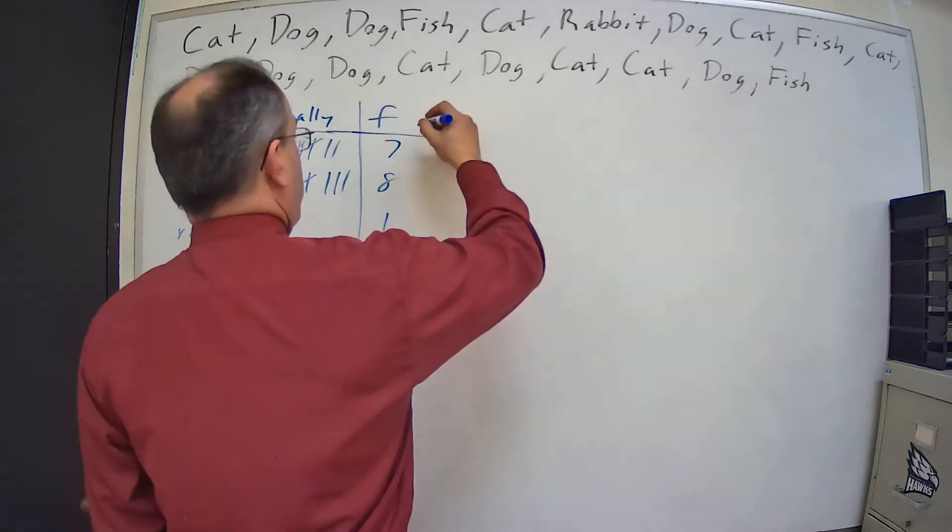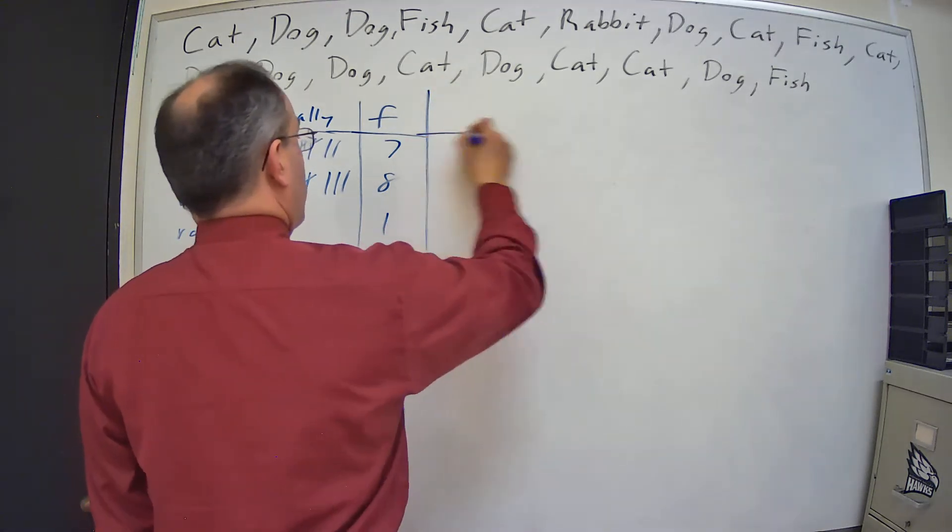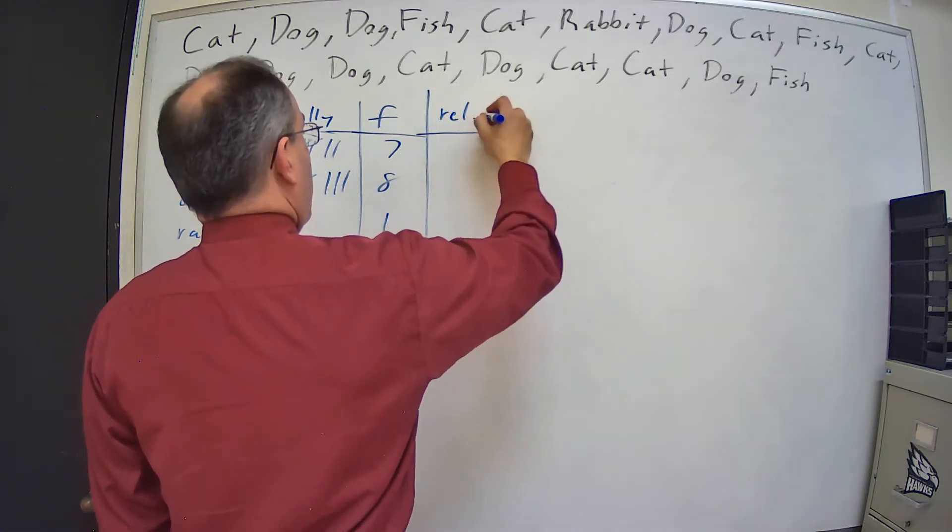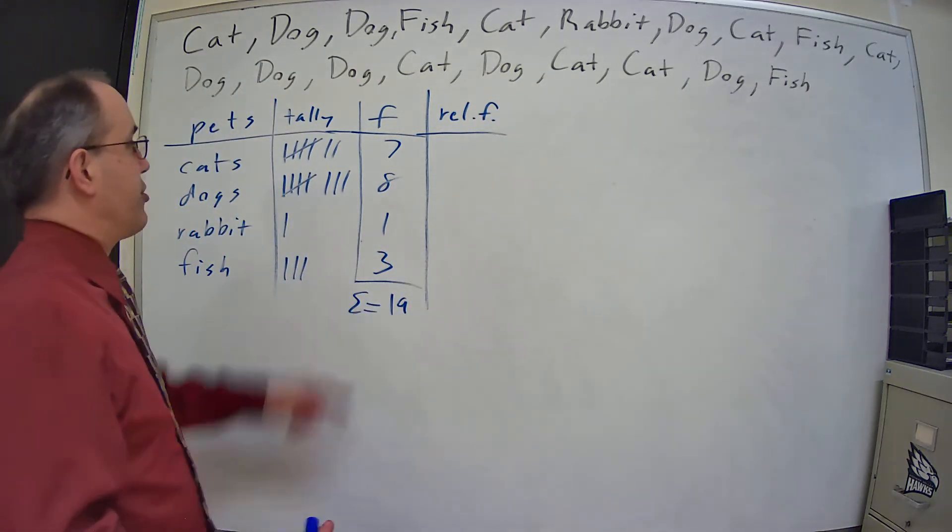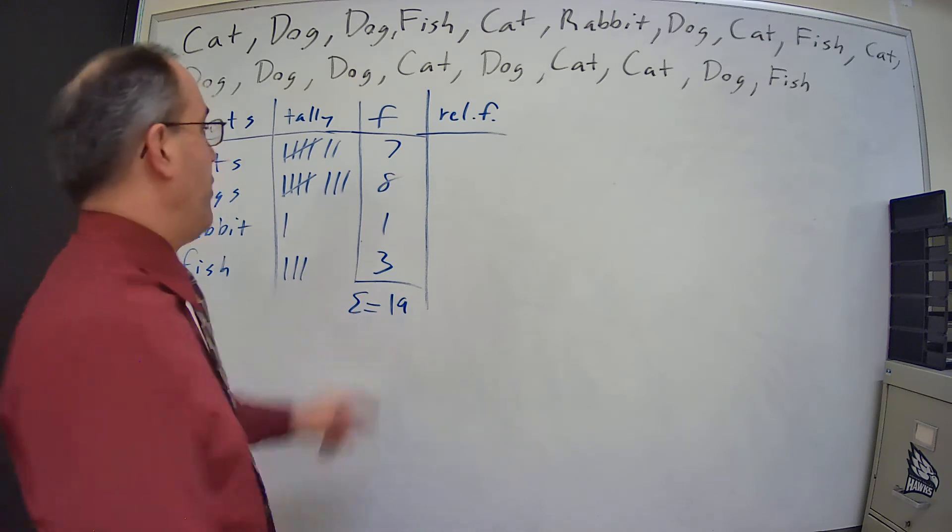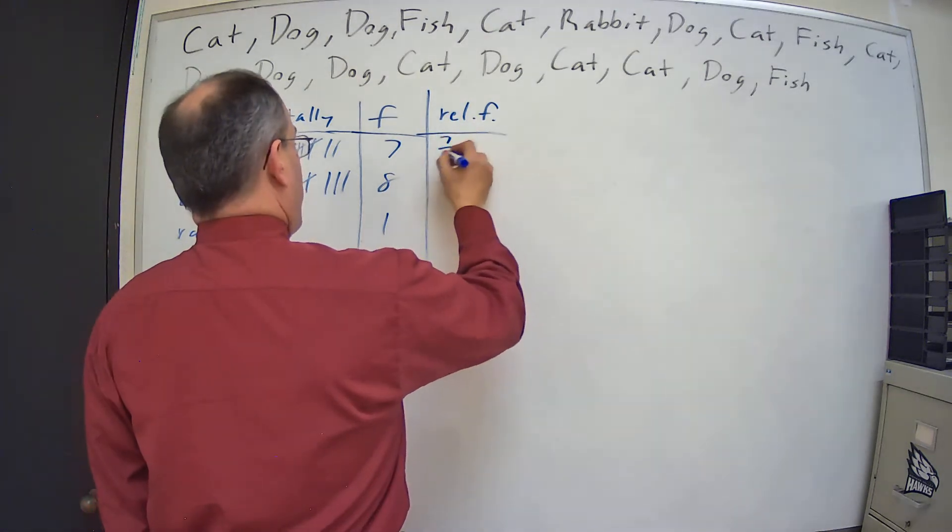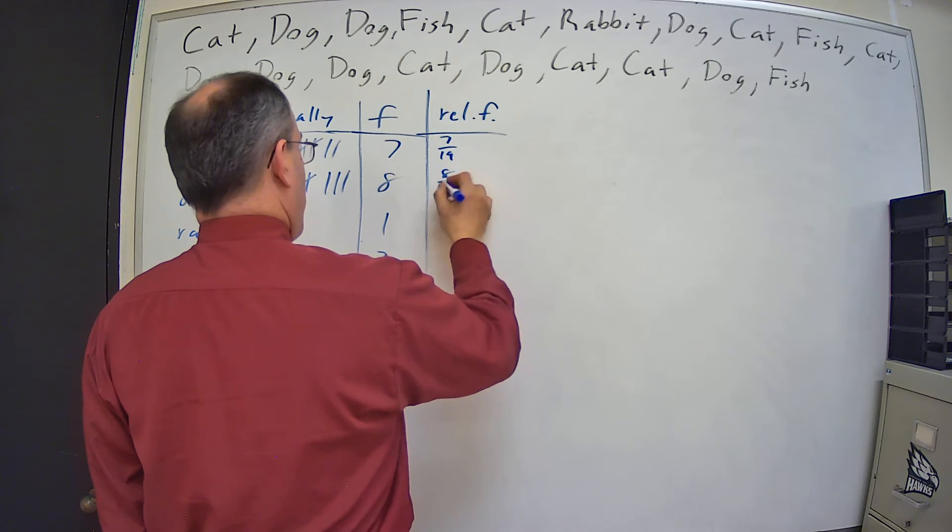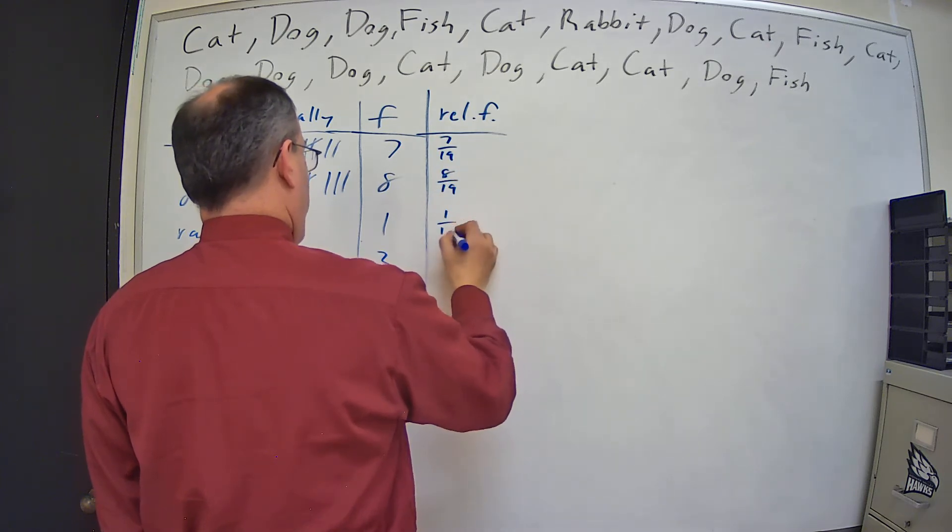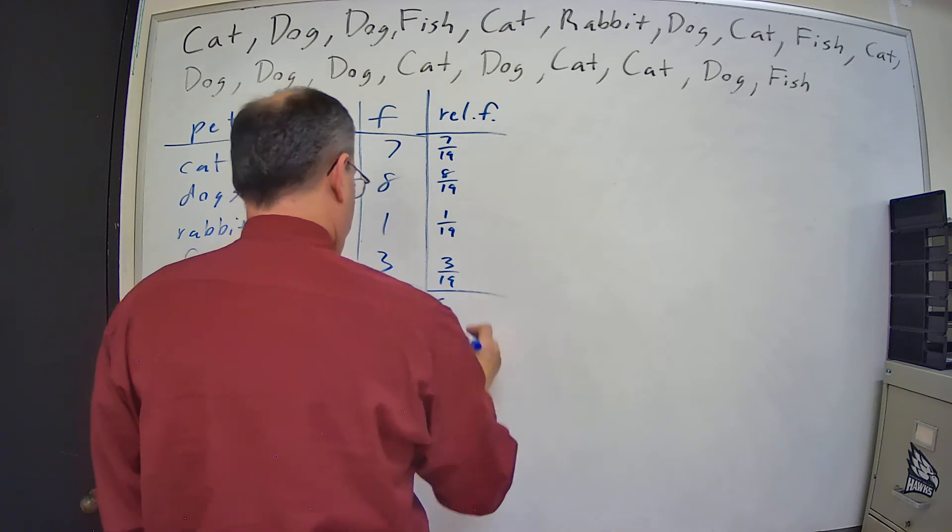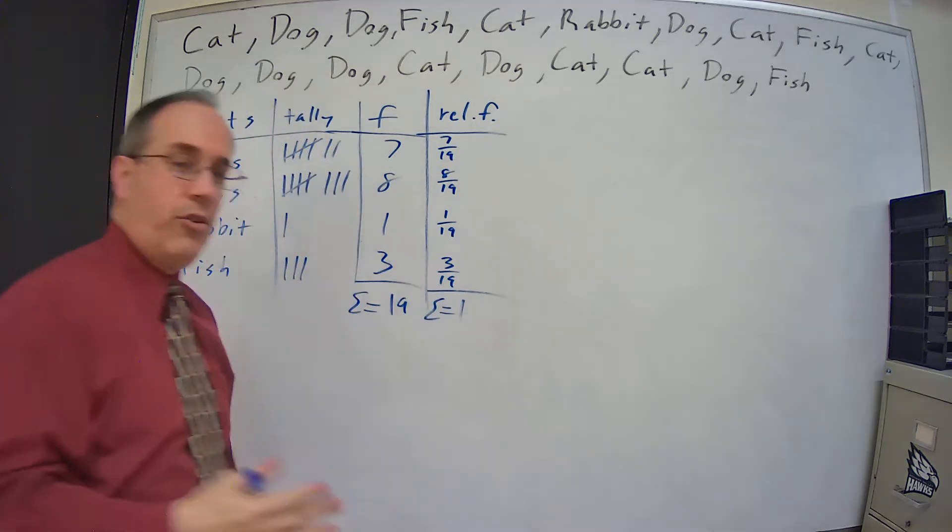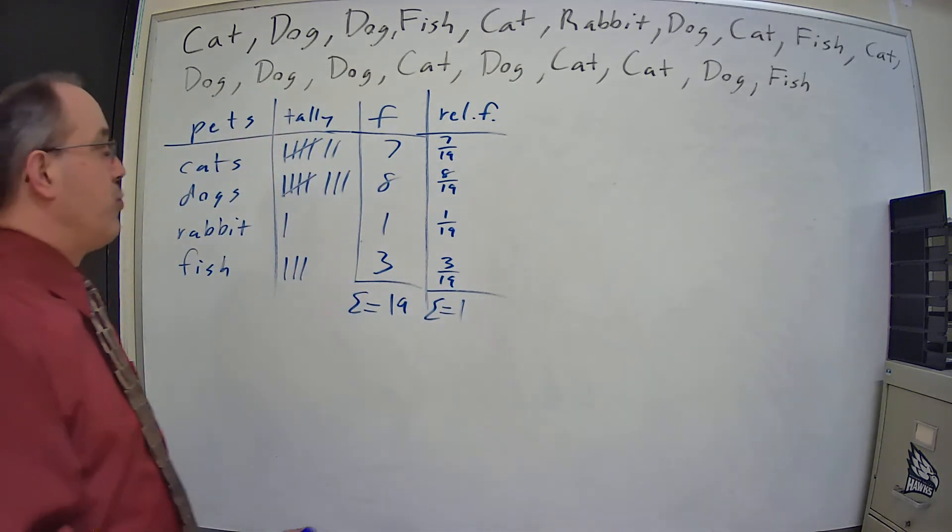Now I'm going to find relative frequencies. Remember, the relative frequency is just the frequency divided by the sample size. So 7 over 19, 8 over 19, 1 over 19, 3 over 19, which if we add that up, that's 19 over 19, which gives us 1 just as it should.